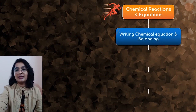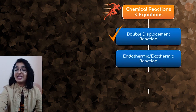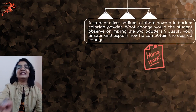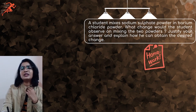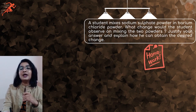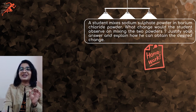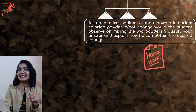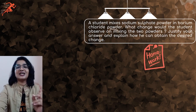So with this we have covered: writing chemical equations and balancing, identifying the type of chemical reactions, decomposition reactions, displacement, double displacement, endothermic and exothermic reactions, redox reactions, reducing and oxidizing agents, and rancidity and corrosion. We are done with chemical reactions and equations. Here is your homework question: A student mixes sodium sulphate powder in barium chloride powder. What change would the student observe on mixing the two powders? Justify your answer and explain how he can obtain the desired change. Think about it — I gave you a hint when we discussed displacement reactions — and post your answers in the comment section.